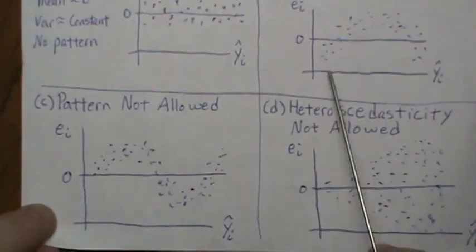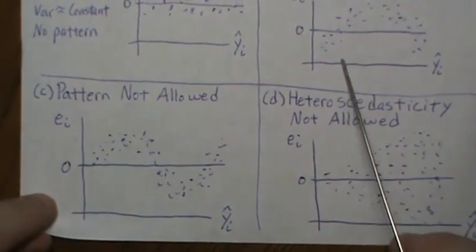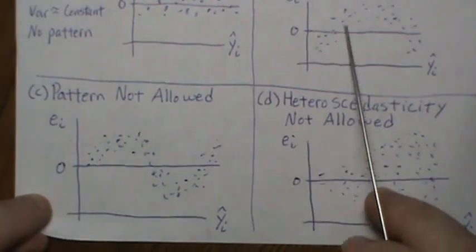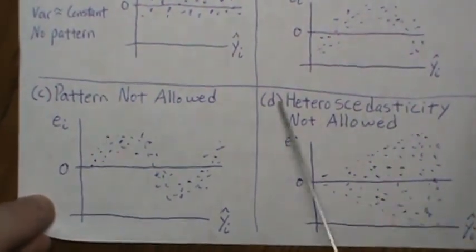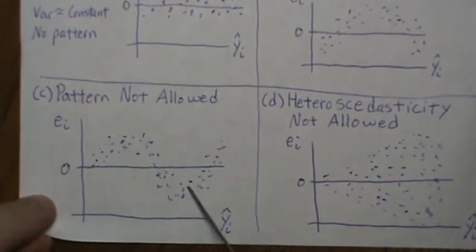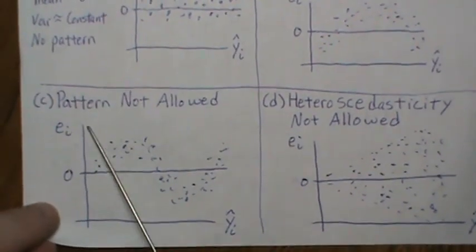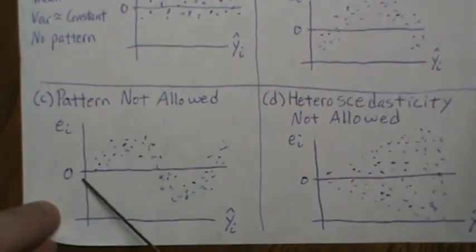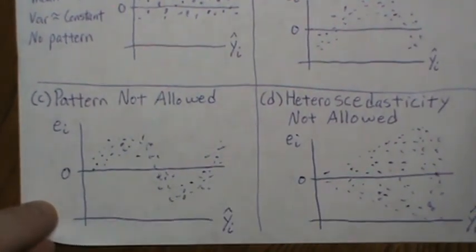And this one is just to follow up here that it doesn't have to just be quadratic. It could be quartic or any pattern that you see in the data is a violation. We want it random about this.